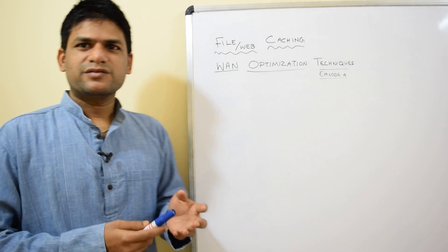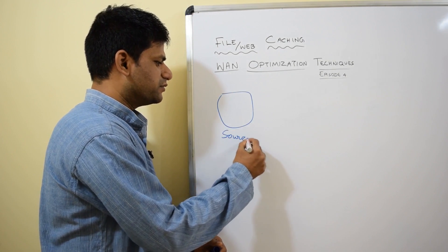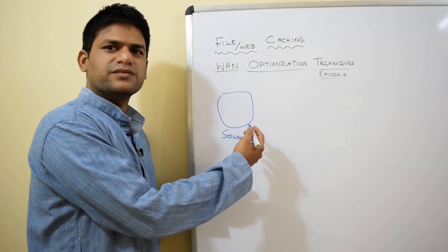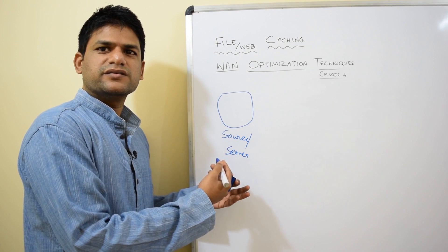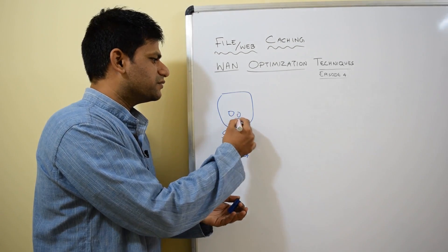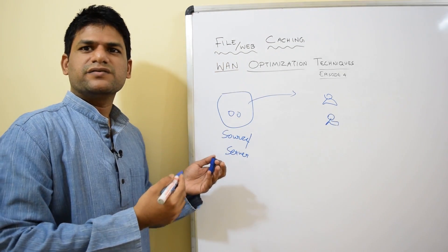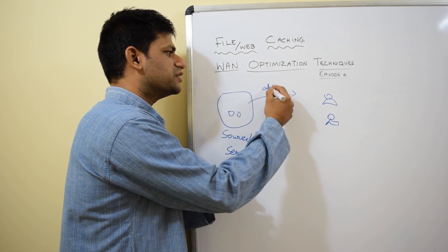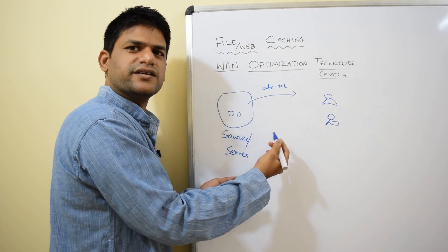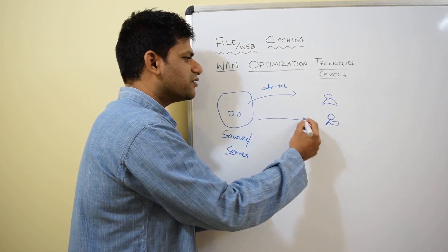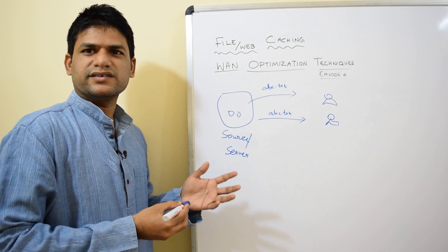As the name suggests, you may have some sort of origin or source — a remote server or system where files reside. Without file caching, each time a user accesses a file, say ABC.txt, it will be pulled from the source. And if another user also tries to pull that file, again another copy will be sent from the server to the client.